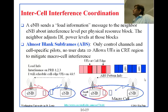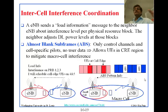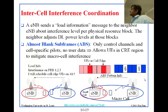For a given resource block, one ENB tells the neighbor: I am going to serve this blue mobile on this particular resource block at this frequency and time. So the other cell transmits what is called an Almost Blank Subframe, or ABS. It is called almost blank because the subframe still has a control part — each subframe has control information at the beginning indicating what is in that frame — but there is no user data, so power is almost zero in the rest of it.